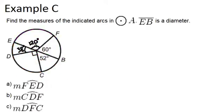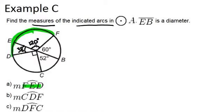In example C, we're looking at the same picture and asked to find the measures of indicated arcs in circle A, where EB is still a diameter. We're first asked to find arc FED. Following those three letters around the circle, arc FED is a combination of arc FE and arc ED, so we add 120 degrees plus 38 degrees to get 158 degrees.